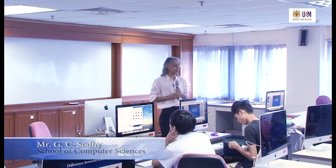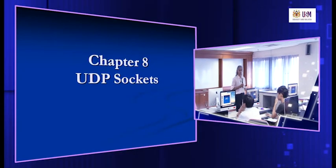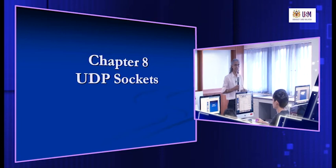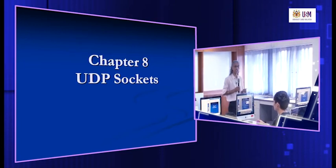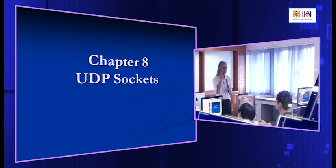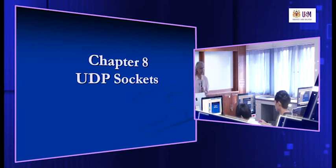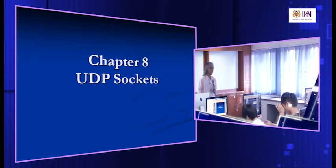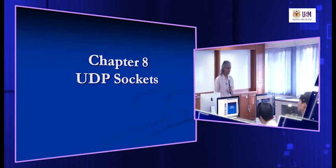So far, if you have noticed, we have been dealing with TCP. All the sockets we create have always been TCP sockets, and the functions we use are also TCP related. For example, we create a TCP socket, then we connect, and then we read and write data. On the server side, we also create a TCP socket, bind, listen, and accept. In this particular chapter, we're going to look at how we can use UDP sockets to communicate between client and server.